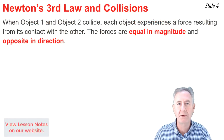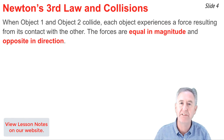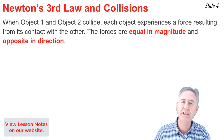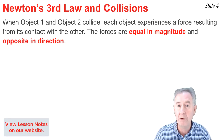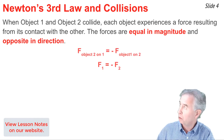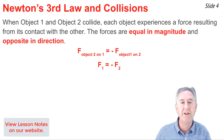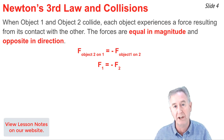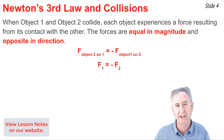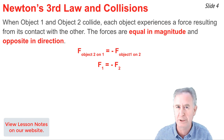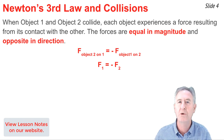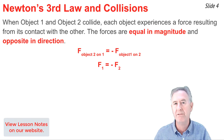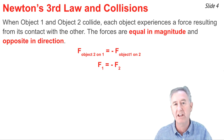When object one collides with object two, there are forces acting on each object as the result of their contact with each other, and these forces are of equal magnitude and of opposite direction. In symbol form, the force of object two on object one is equal to the force of object one on object two. The negative sign in front simply means in the opposite direction. Or more simply, F1 equals the negative of F2.